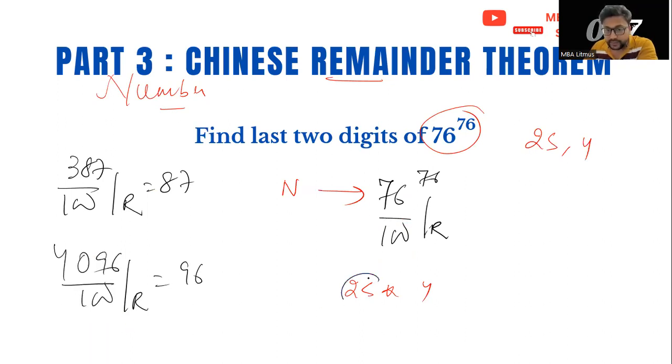So I have to divide it with 25. If I divide this number with 25, 75 is divisible, so it will give me a remainder of 1. If I divide this number with 4, I will get a remainder of 0.